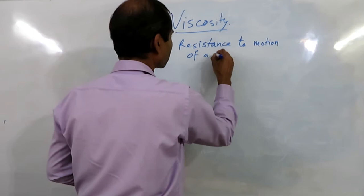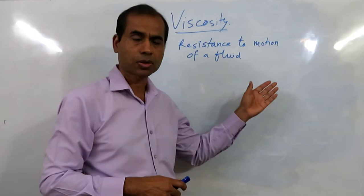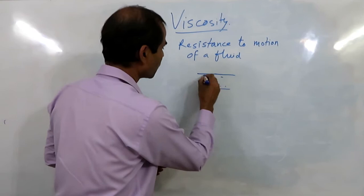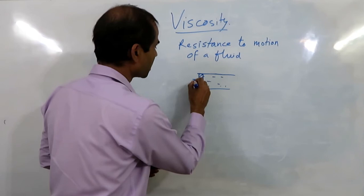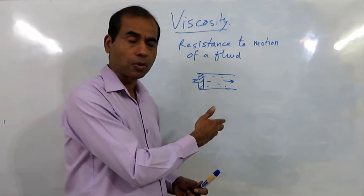Any fluid, whether liquid or gas, will cause some resistance to motion, and this kind of motion happens when we flow the liquid. For example, we are pumping this liquid here. So in this case we are trying to make this liquid flow, and in this kind of situation the liquid will impose some resistance to flow. This property of the liquid is known as viscosity.